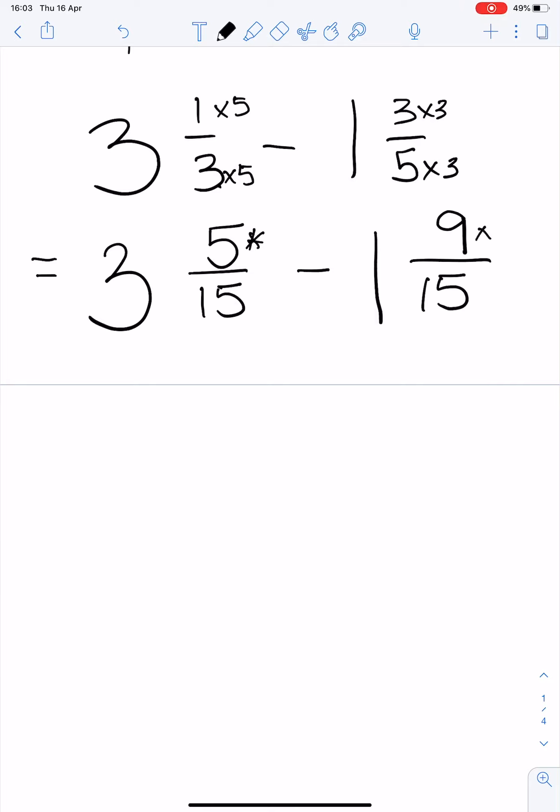But now we have another problem. 5 is smaller than 9 so we are going to have to borrow from the whole number. So 3 is 2 plus 1 and our denominator is 15, so our whole number that we have borrowed is 15/15 plus our 5/15 minus 1 and 9/15.